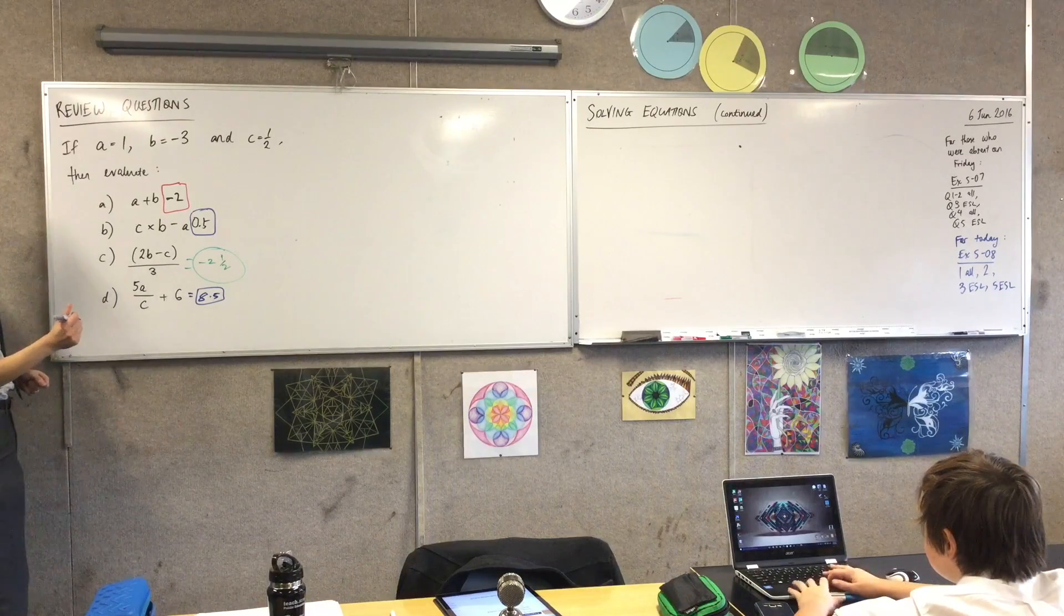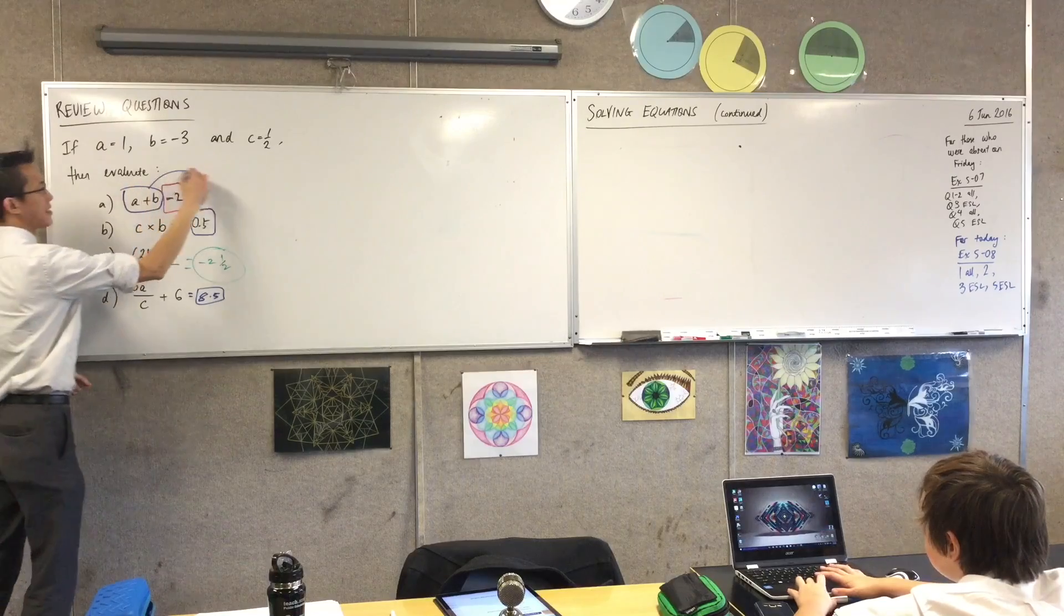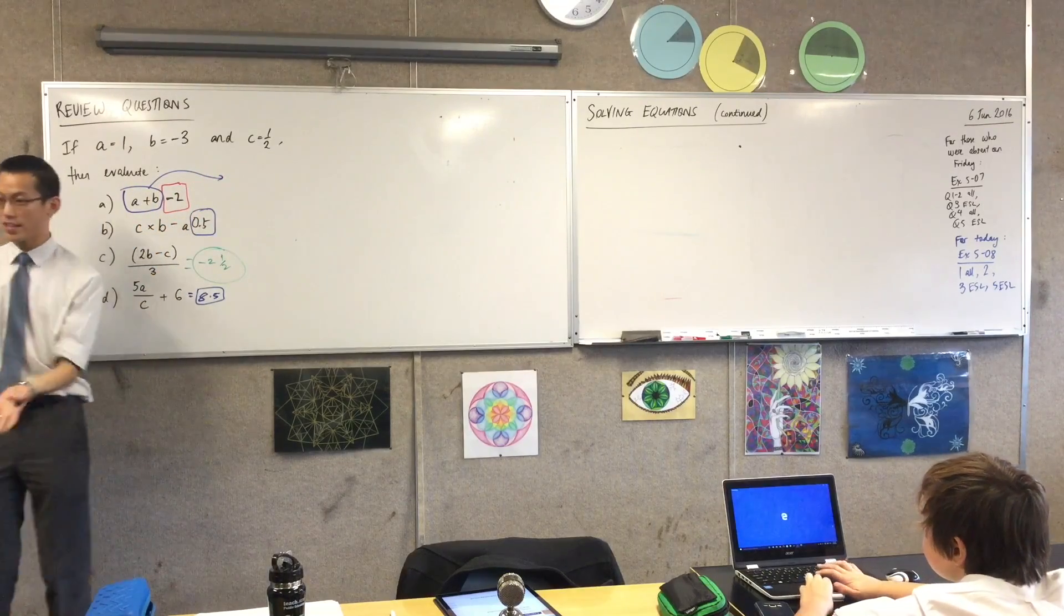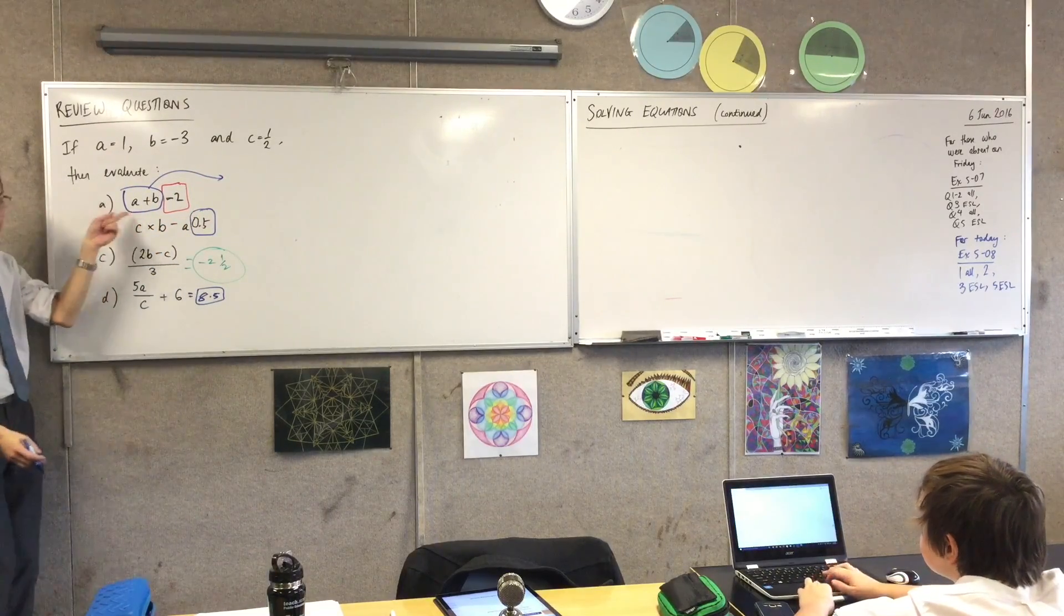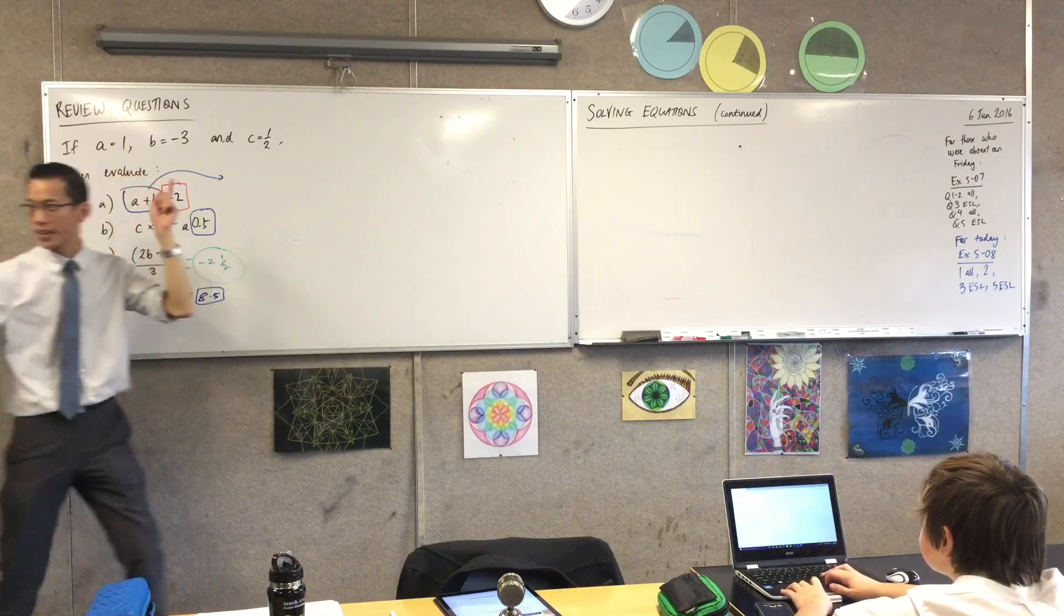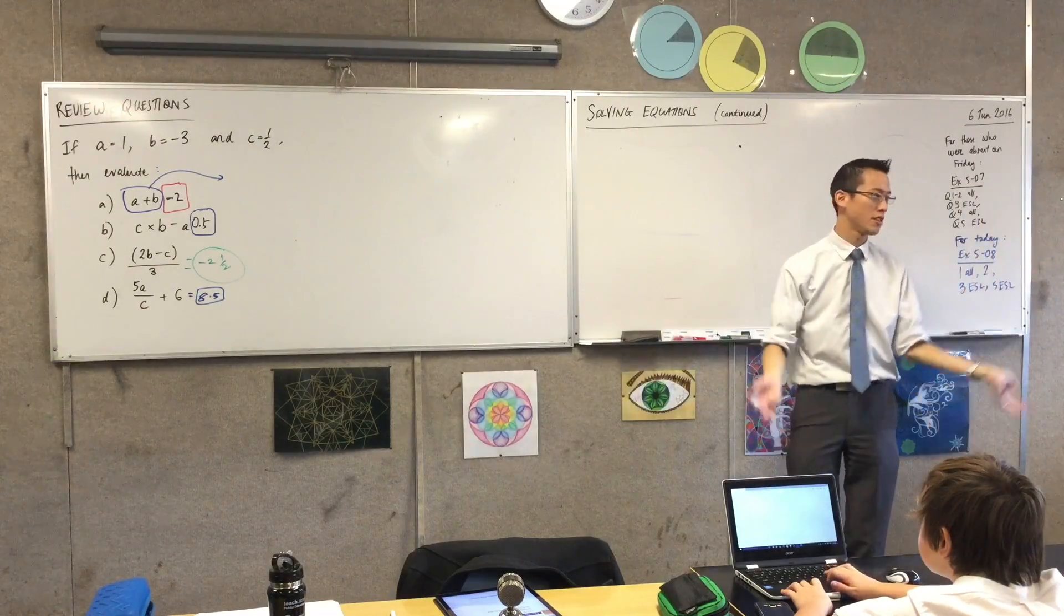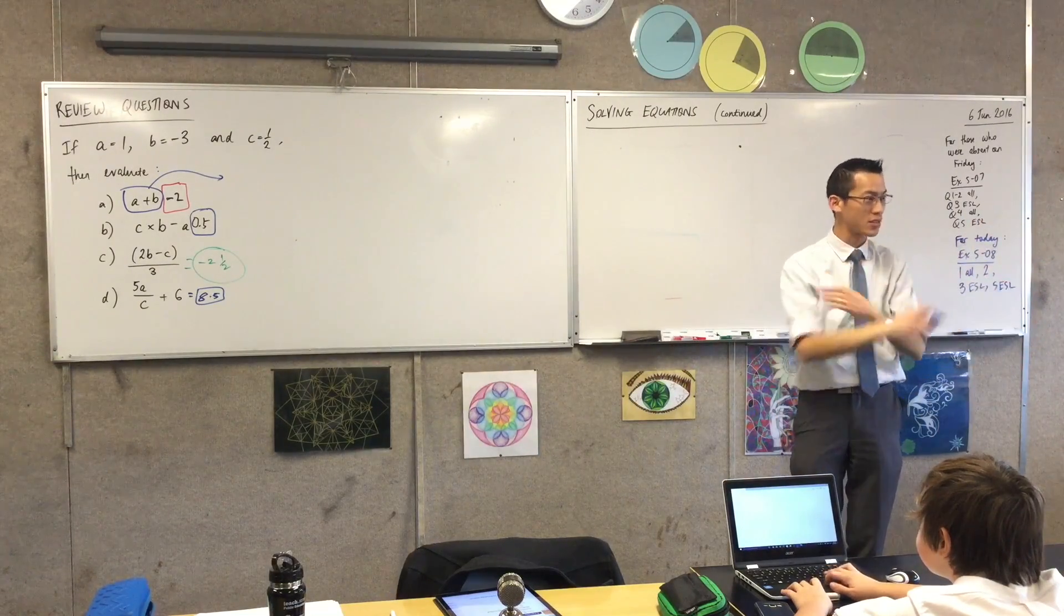So change A to 1 and B to minus 3. Okay, so I'm going to take this. And by the way, we have a fancy word for this. When you take the letters, the pronumerals, and you swap back, you replace them with the numbers. What's that called? Substitution. Substitution, just a fancy word, it literally means swap or replace or switch.